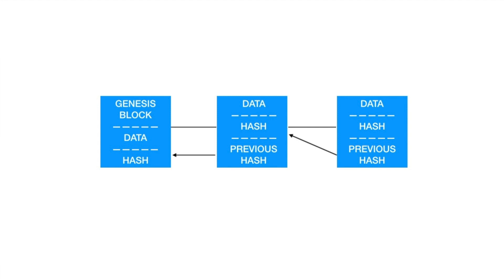The second block contains data, a hash, and a previous hash. The previous hash is the same as the hash of the Genesis block, as long as nobody tampered with the data. The purpose of this previous hash is to connect the second block to the Genesis block.